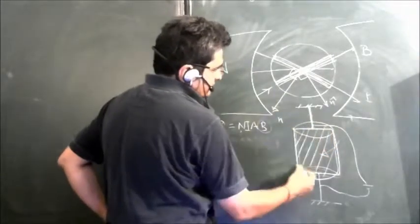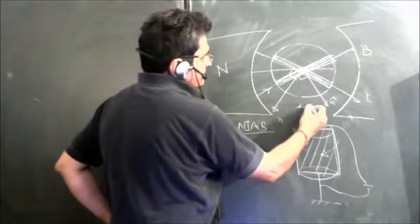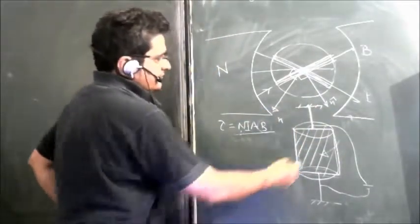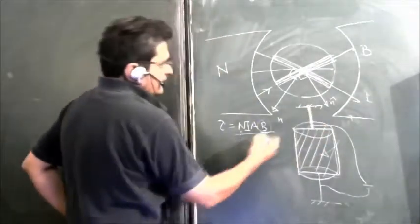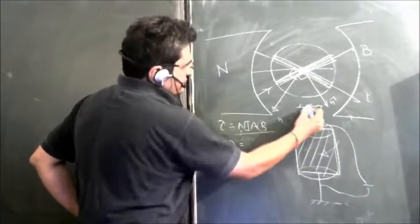Now when the current is passed through this coil, it experiences this torque because of which it tries to rotate. When this tries to rotate, this strip will twist and this will have a restoring torque.